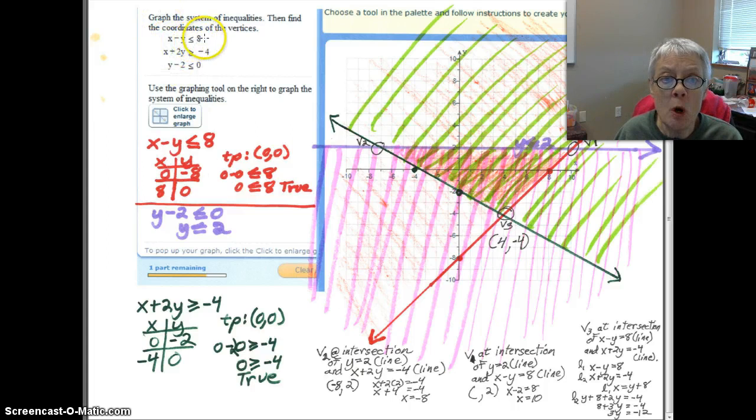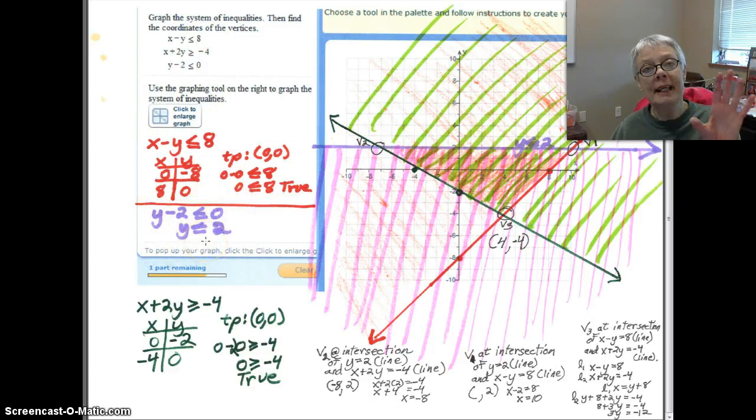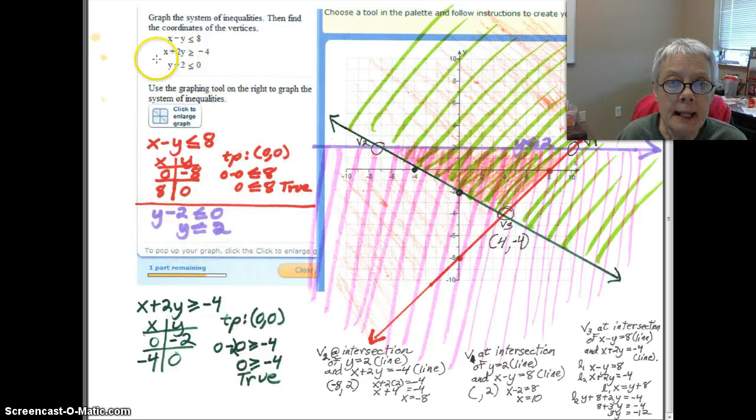I took X minus Y is less than or equal to 8 and put it in red. Y minus 2 is less than or equal to 0, turned it into a purple inequality, and X plus 2Y is greater than or equal to negative 4 is now green.